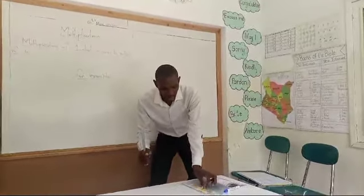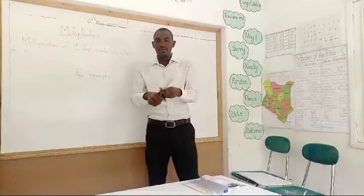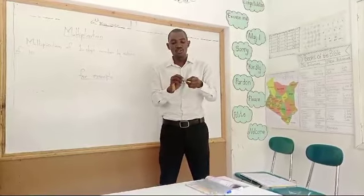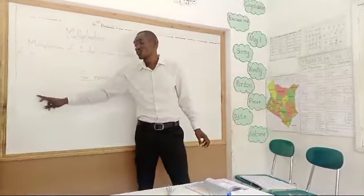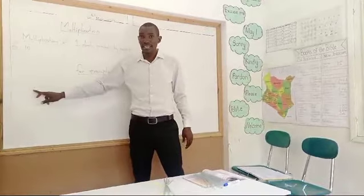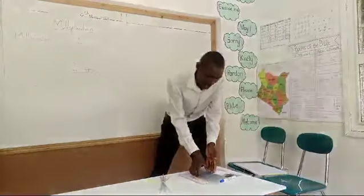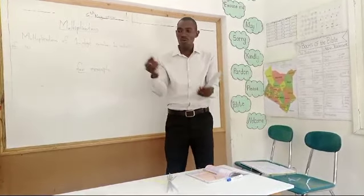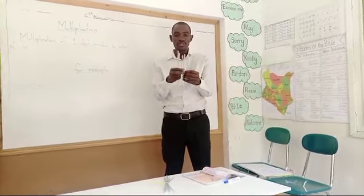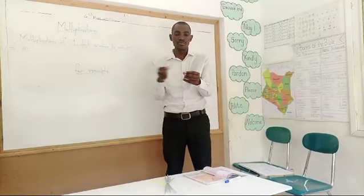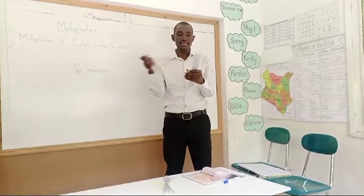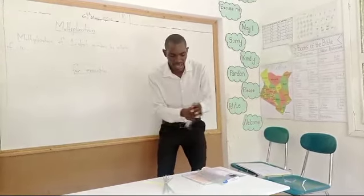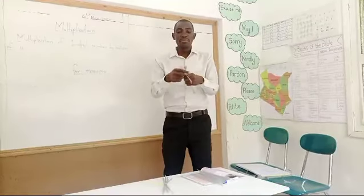Now we have one, two, three, four, five, six, seven, eight, nine, ten. So this one is one bundle for one group. We have to remember that we need two bundles of ten because of the two. So we are getting another bundle: one, two, three, four, five, six, seven, eight, nine, ten.